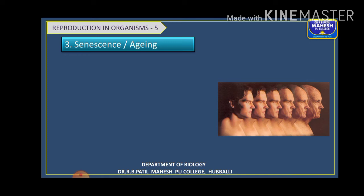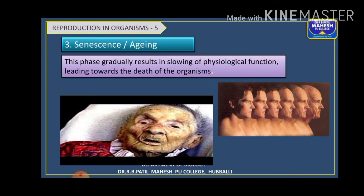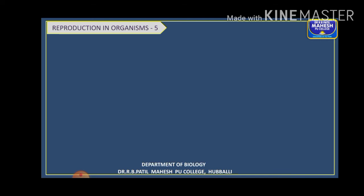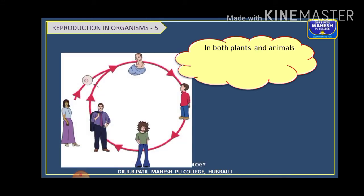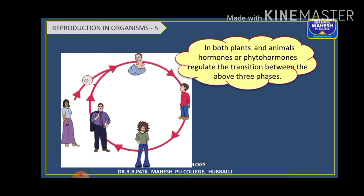The next phase is the senescence phase or the phase of aging. This phase gradually results in the slowing of physiological functions — it marks the end of the reproductive phase. Degeneration starts in both structure and functioning of the body. It is the last phase of the lifespan, which leads to the death of the individual. In both plants and animals, it is mainly hormones — phytohormones in plants — that are responsible for regulating the changes from one phase to the next. Certain environmental factors also regulate the reproductive processes and behavior of organisms.